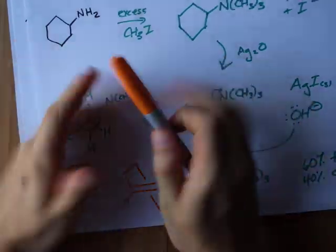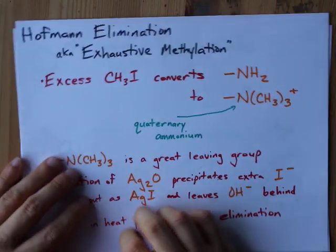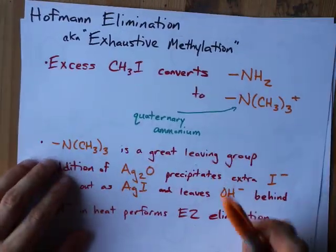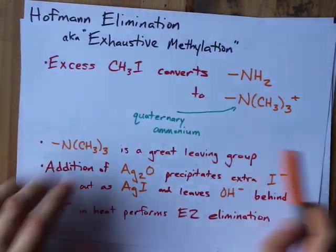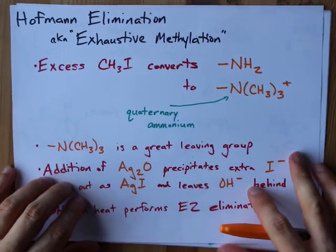Anyways, that's just like stereo considerations. Cool. Hofmann elimination, though, the mechanism is the same every time. Add extra methyl iodide to make that N(CH3)3.